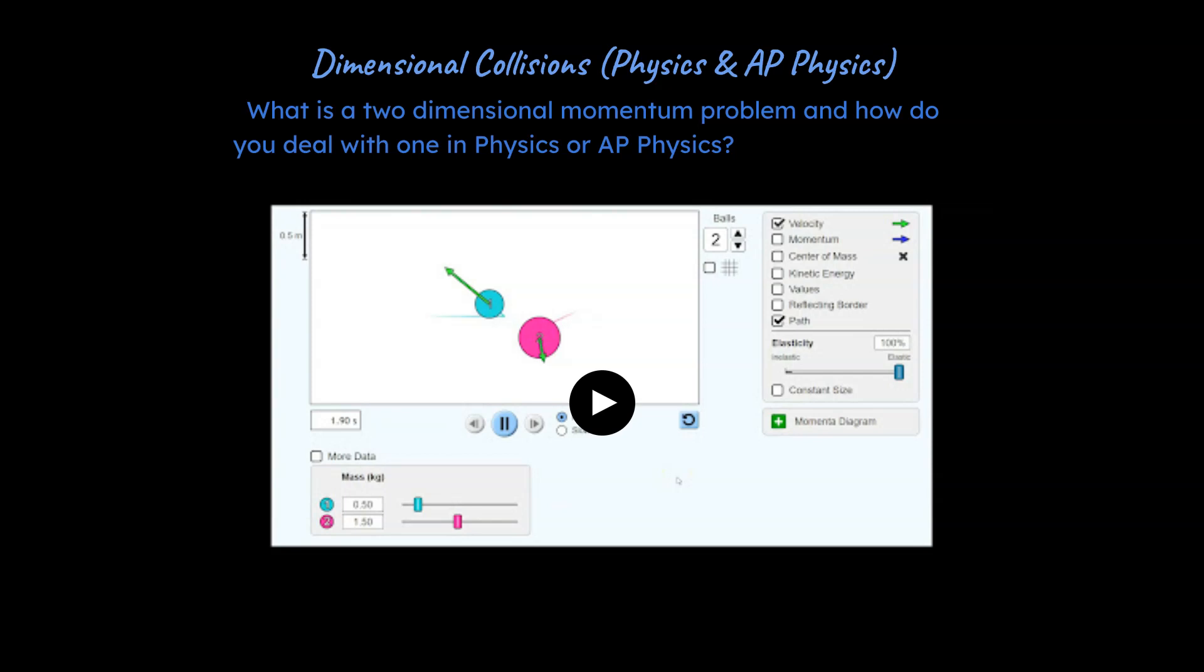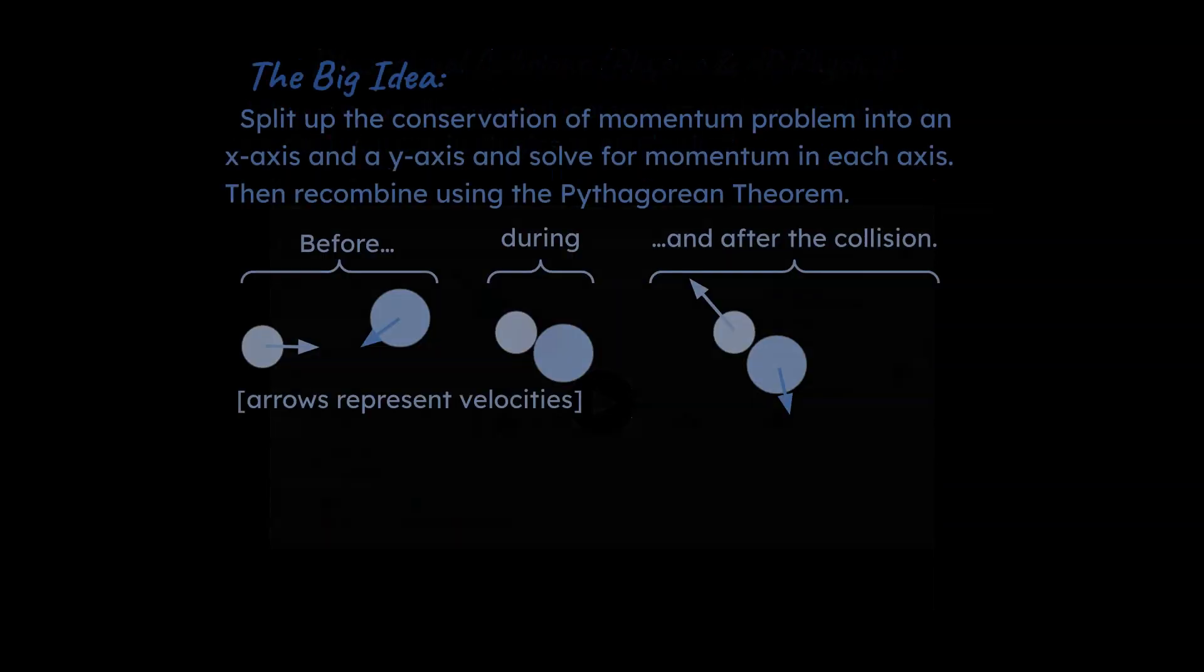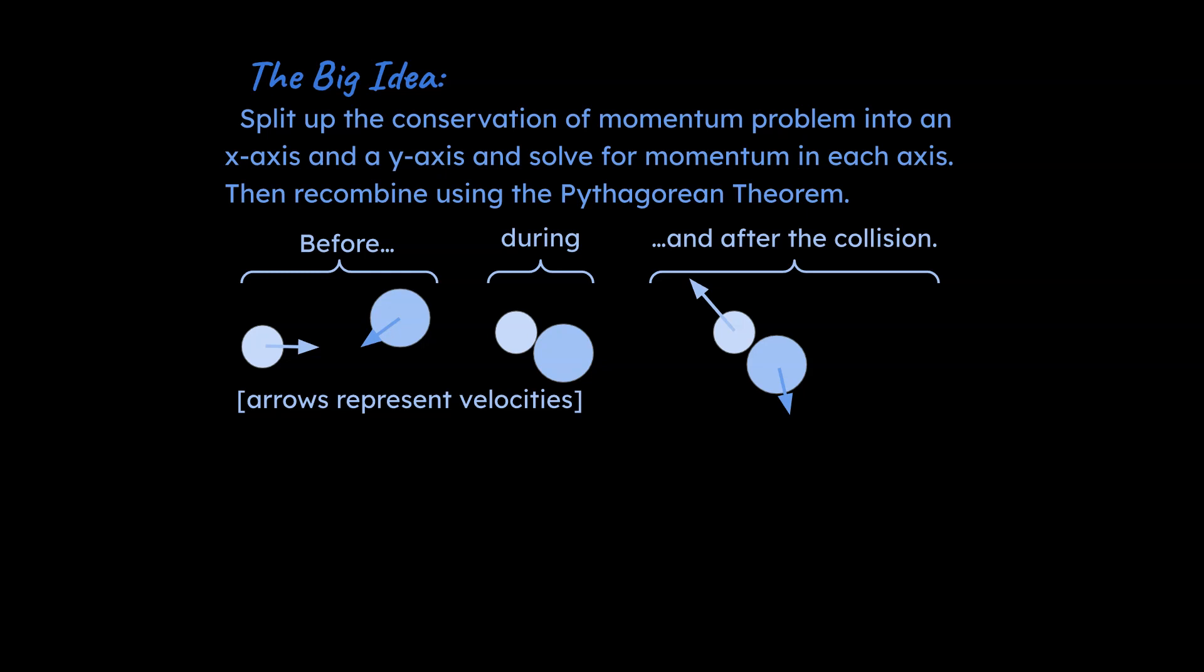But that's what we're going to be dealing with in terms of analyzing two-dimensional momentum problems and figuring out how to solve for unknowns with them. So let's go ahead and get to it. The big idea here is that you want to split up conservation of momentum problems into an x-axis and a y-axis and solve for the momentum in each axis, then recombine them using the Pythagorean theorem and trig.